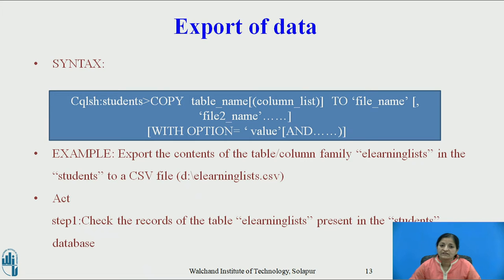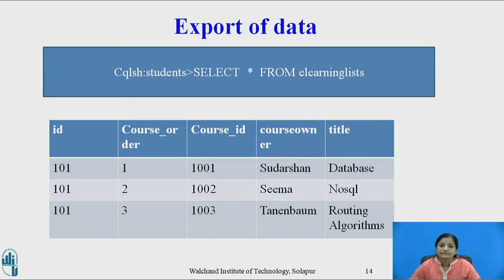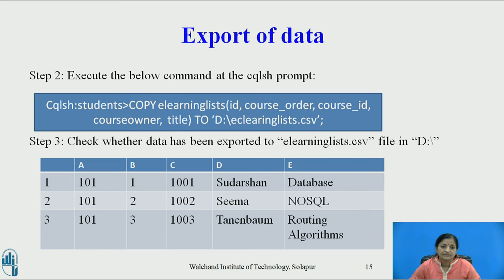To export the contents of the table elearninglist in the student's database to a CSV file elearninglist.csv on the D drive: Step 1 — check the records using SELECT * FROM elearninglist. The table consists of three rows. Step 2 — execute COPY elearninglist followed by the column list TO elearninglist.csv. Then confirm the export by displaying the content of the CSV file. The output shows that all three rows have been copied successfully.